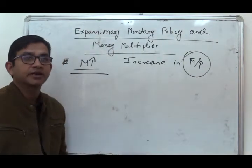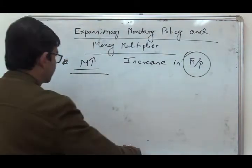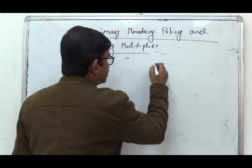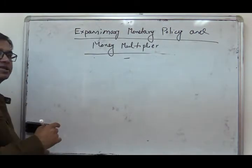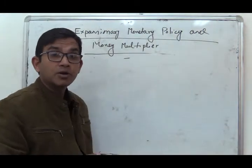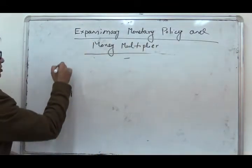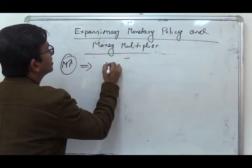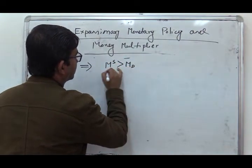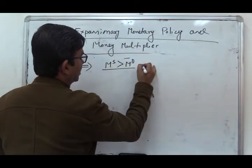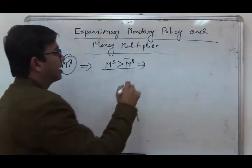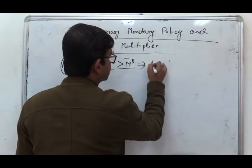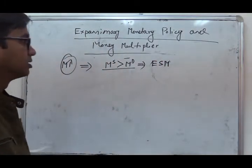We will now explain the effects of an increase in money supply in the IS-LM framework. Let us start with the situation when both the product market and money market are in equilibrium. Whenever money supply increases, the supply of money will be greater than the demand for money, causing an excess supply situation in the money market.